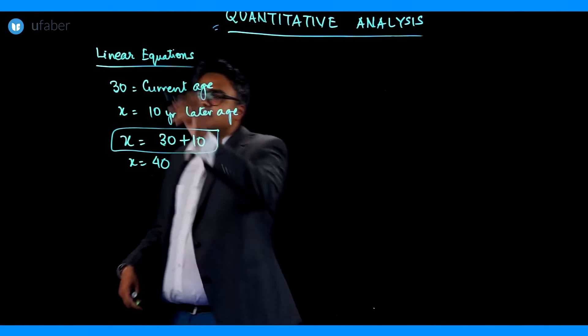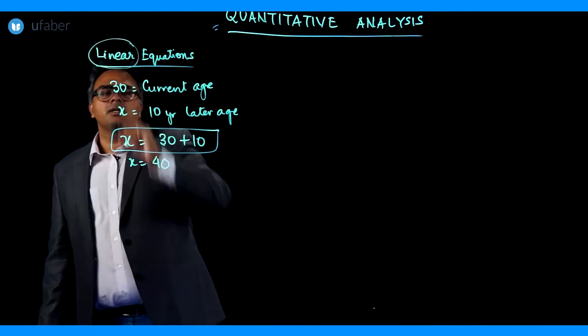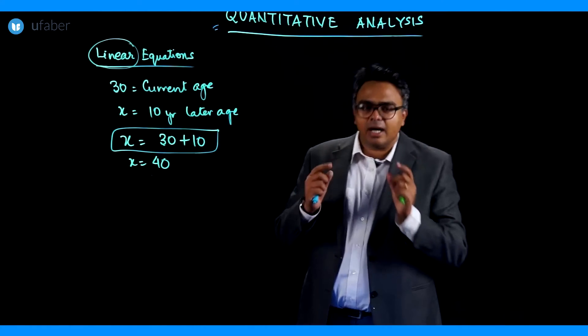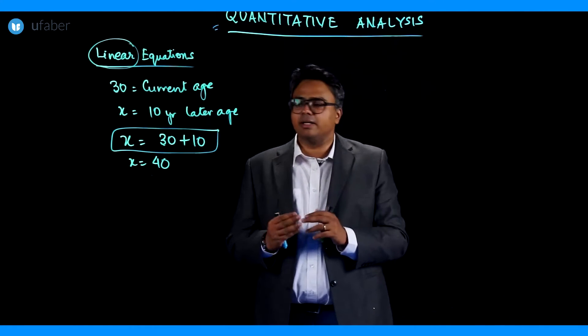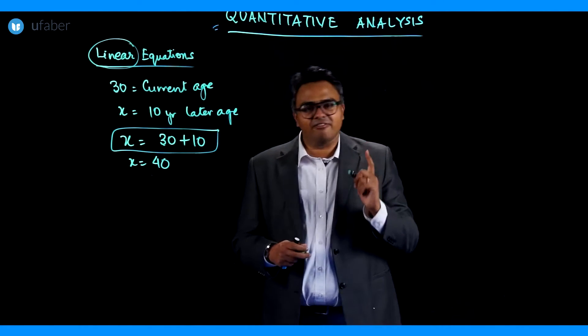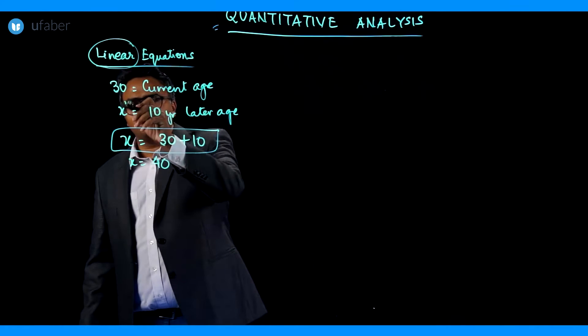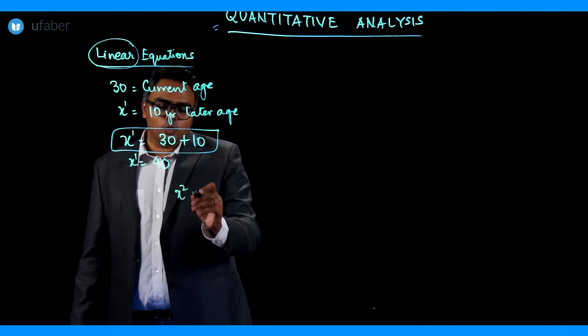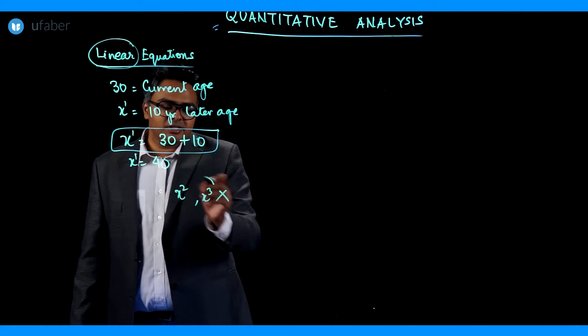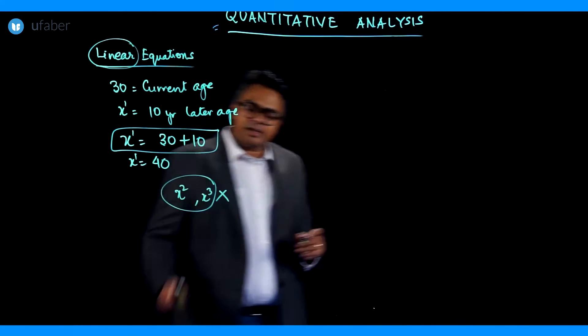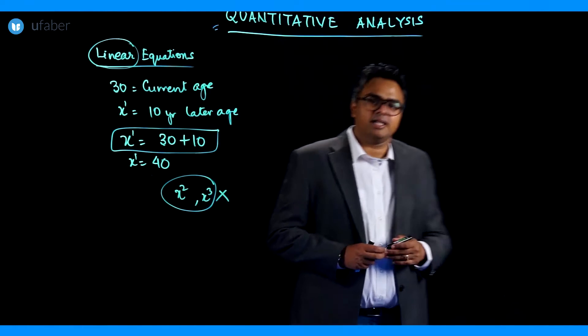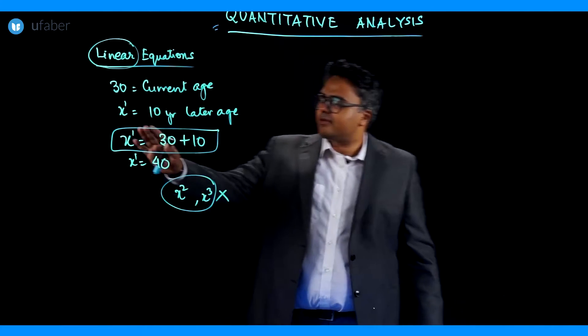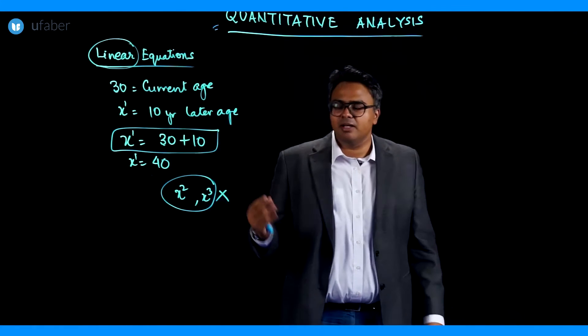Why do we call them linear? The word linear is important. Linear means here nothing will be in square. That means the unknown quantity will be having power 1. So if we write x it can also be written as x raised to power 1. There won't be any x square or x cube in this because it's a linear equation. If it becomes x square it becomes a quadratic equation which we will not discuss. So the x, the power of the variable will remain 1.